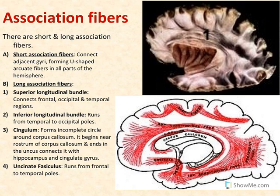Association fibers occur in two forms inside the brain according to their length: either short or long. The short association fibers connect between adjacent gyri, for example the pre-central and post-central gyrus of the brain. The pre-central gyrus is in the frontal lobe and the post-central gyrus in the parietal lobe. Also, the superior and inferior parietal lobules on the parietal lobe. These fibers are in the form of U-shaped lines.